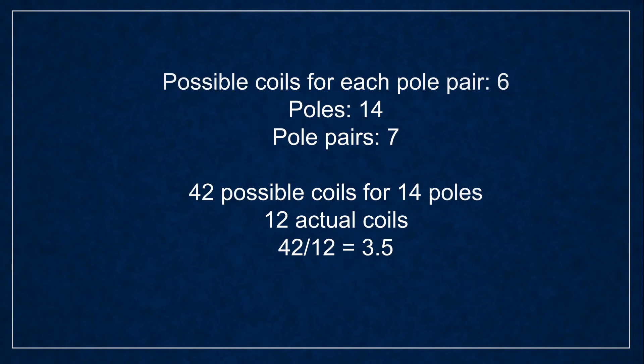There are six possible slots for each pole pair so you take the number of poles, divide by 2 to get the pole pairs, and multiply by 6 to get the number of possible phase slots. For the 14 pole motor this gives you 42 slots.